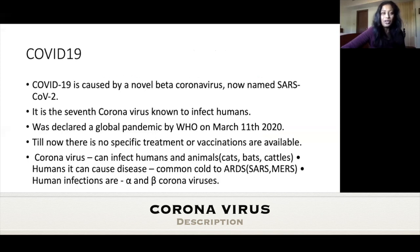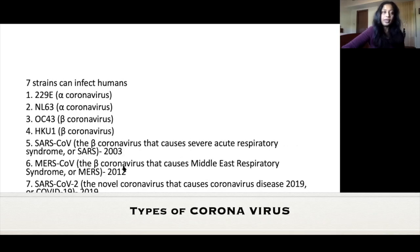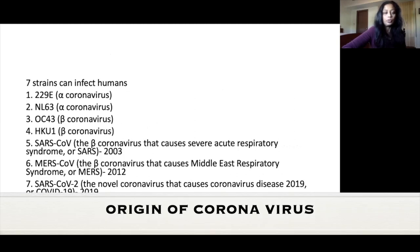Unfortunately, there are no specific treatments or vaccinations available. It can infect both humans and animals, and in humans causes disease ranging from a common cold to SARS or MERS. There are seven strains that can infect human beings. The common SARS virus occurred in 2003 as a beta coronavirus causing acute respiratory syndrome, then the Middle East respiratory syndrome in 2012, and now SARS-CoV-2, also known as COVID-19.